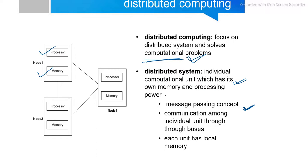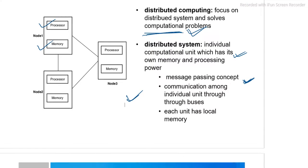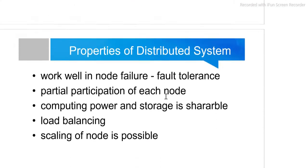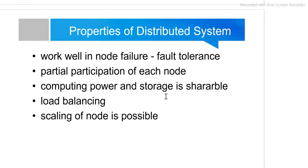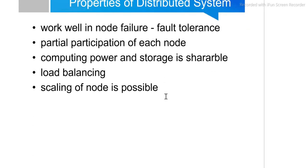Each entity has its own local memory. These are important features of distributed computing, distinguishing it from centralized computing. These are some of the common properties of a distributed system.